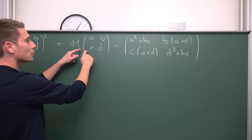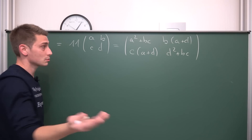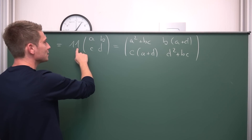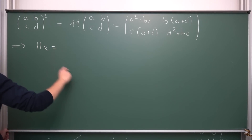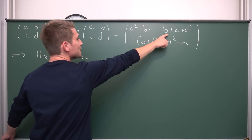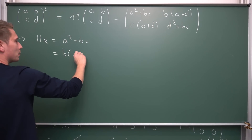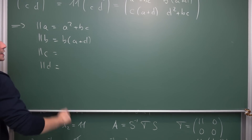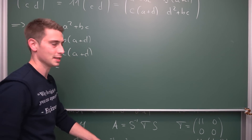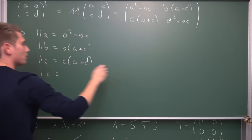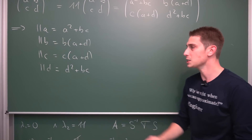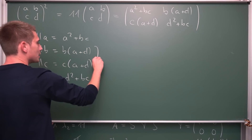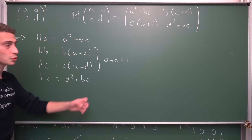Those are our equations, giving a system with four equations and four unknowns — nicely determinable. We have: A²+BC = 11A, B(A+D) = 11B, C(A+D) = 11C, and D²+BC = 11D. As long as B and C are not equal to 0, we can divide both sides by them, leaving us with A+D = 11. This is going to come in handy in a second.